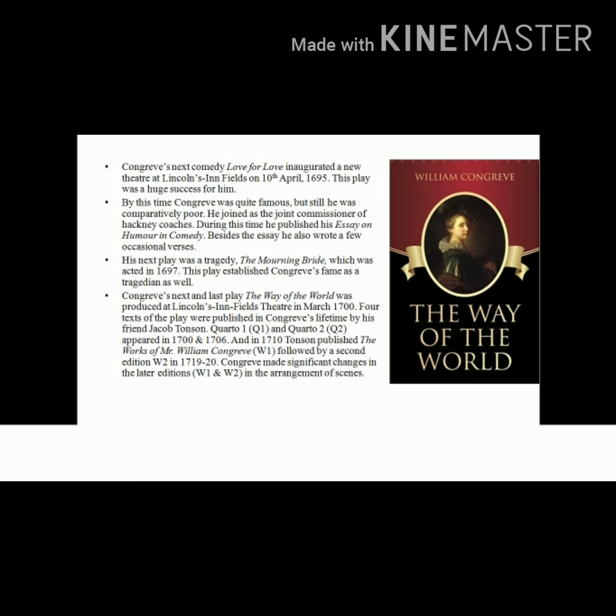During this time, other than writing essays, he also wrote a few occasional verses, which include a prologue to a play written by Dryden's younger son. While these were the byproducts of Congreve's literary activity, his principal preoccupation was drama. During this time he was working on a tragedy entitled 'The Morning Bride,' which was enacted in the year 1697. This play established Congreve as a versatile dramatist, equally equipped in writing tragedy.